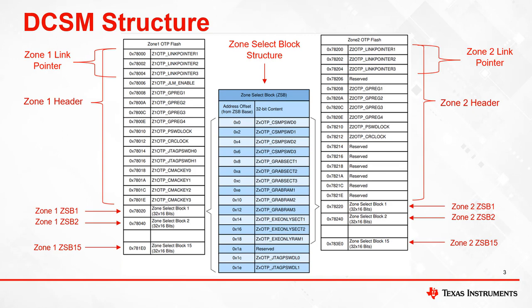Note that the link pointer is the only setting in the zone header that can be configured multiple times. The values programmed in the zone header and the currently active zone select block combine to control the security settings for a specific zone. More information on the link pointer and zone select block will be available in a later video in this series.